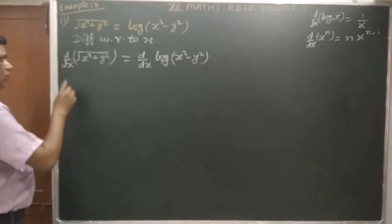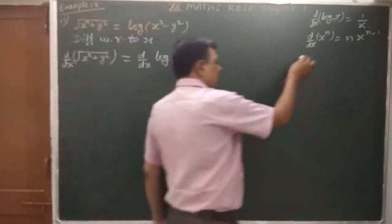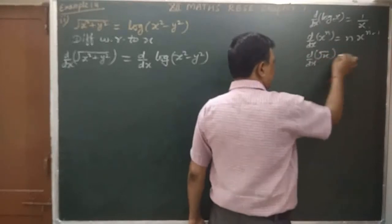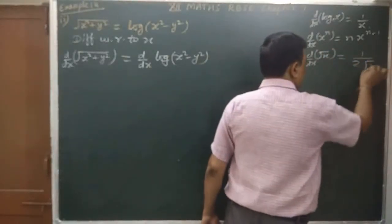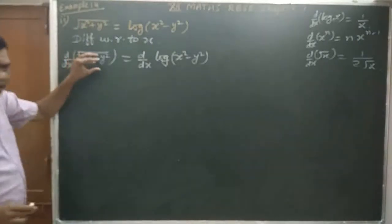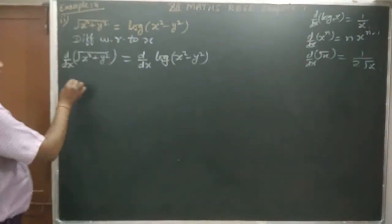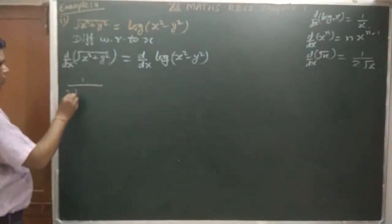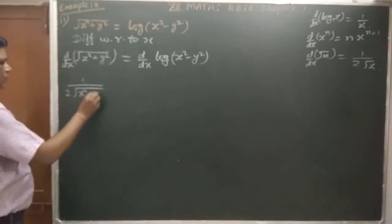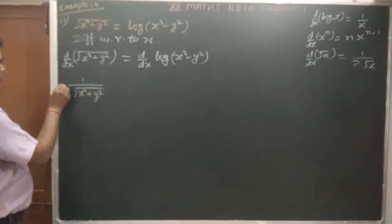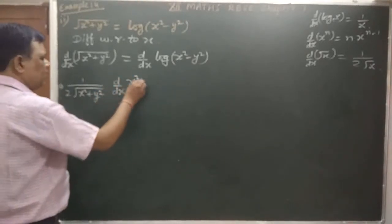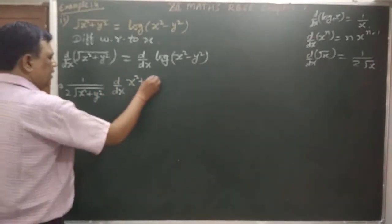The rule is that d by dx of root x is 1 upon 2 root x, so d by dx of root(x² + y²) gives 1 upon 2 root(x² + y²), and the differential of x is the value of x.